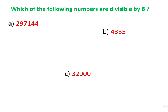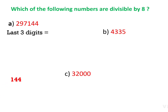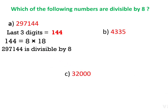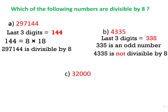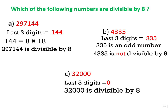Three more questions: 2,097,144 — last three digits are 144. Dividing 144 by 8 gives 144 = 8 × 18. Therefore, 2,097,144 is divisible by 8. Question B: 4,335 — last three digits are 335. Since 335 is an odd number, 4,335 is not divisible by 8. Question C: the last three digits are 000, and 0 is a multiple of 8. Therefore, 32,000 is divisible by 8.